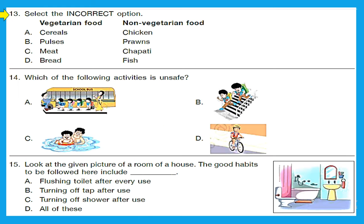Question 13: select the incorrect option. One side is vegetarian food, the other is non-vegetarian food. Option A — cereal is vegetarian, chicken is non-vegetarian: correct. Option B — pulses are vegetarian, prawns are non-vegetarian: correct. Option C — meat is listed under vegetarian food, which is incorrect because meat is non-vegetarian, and chapati is listed under non-vegetarian food but is actually vegetarian. So option C is the incorrect option.